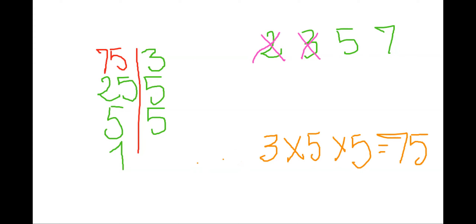Entonces, ¿cuál sería la respuesta que vamos a anotar ahí en el libro? La C. La respuesta es la C. Tres y cinco — esa sería mi respuesta.